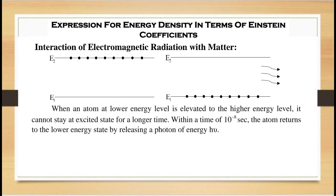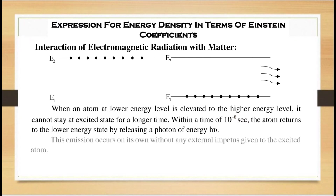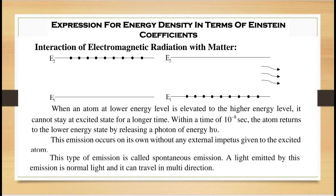When an atom at a lower energy level is elevated to a higher energy level, it cannot stay at the excited state for a long time. Within a time of 10^(-8) seconds, the atom returns to the lower energy state by releasing a photon of energy hν. This emission occurs on its own without any external impetus. This type of emission is called spontaneous emission, and the light emitted travels in multiple directions.